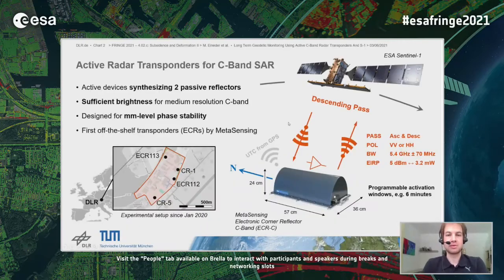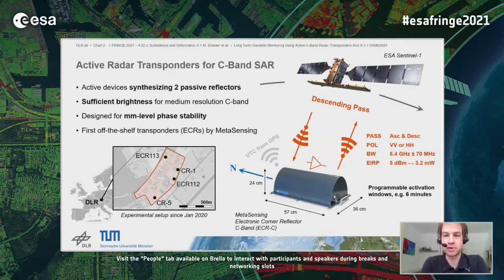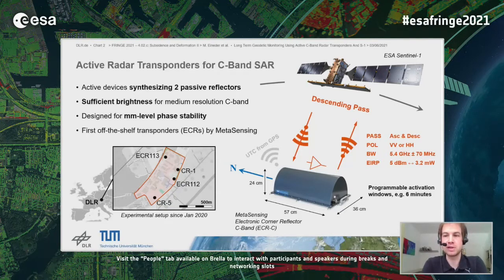The transponder principle is relatively simple. We have a device that catches the signal coming down from the Sentinel SAR sensor, amplifies it, and transmits it back in the direction where it came from. These devices can do this for ascending or descending passes. You have to pick polarizations. They are usually built for a specific frequency band — in this case C-band — so they support not only Sentinel but also Radarsat in principle.